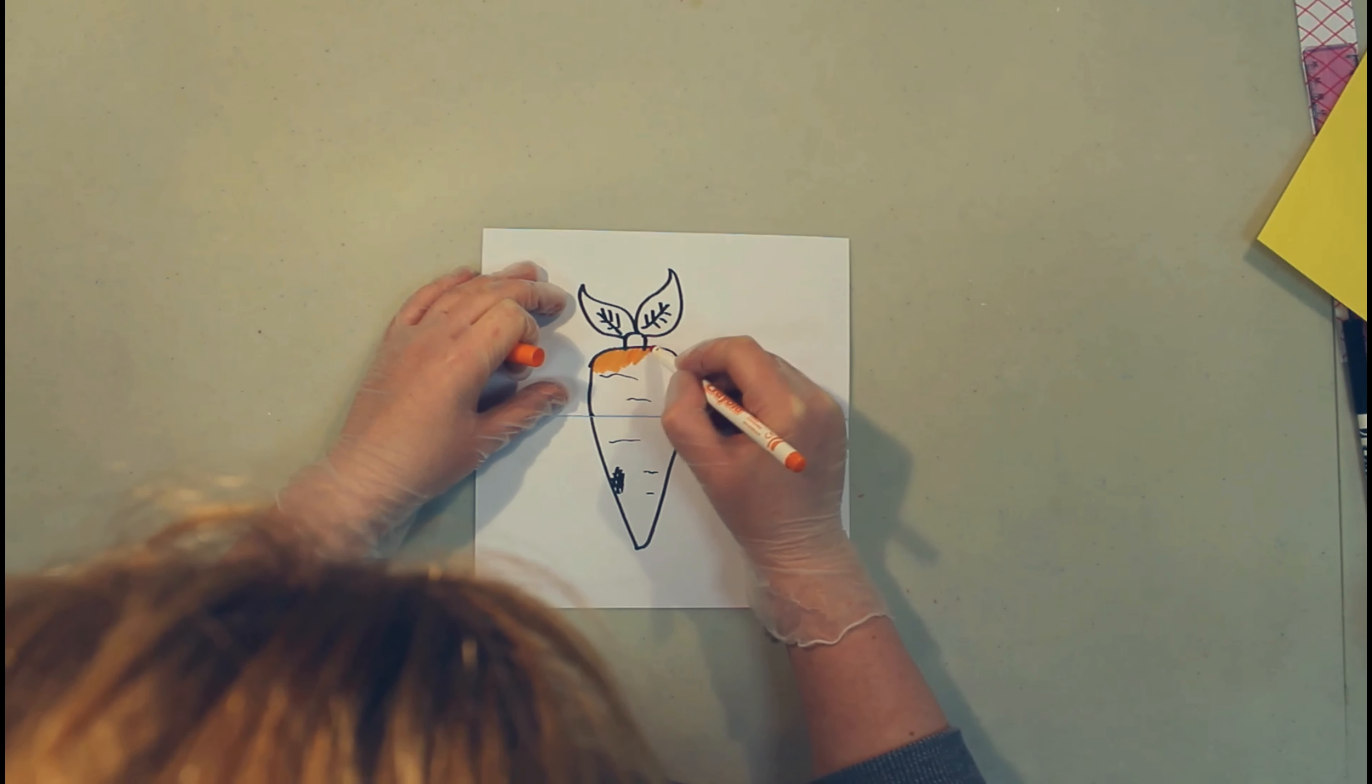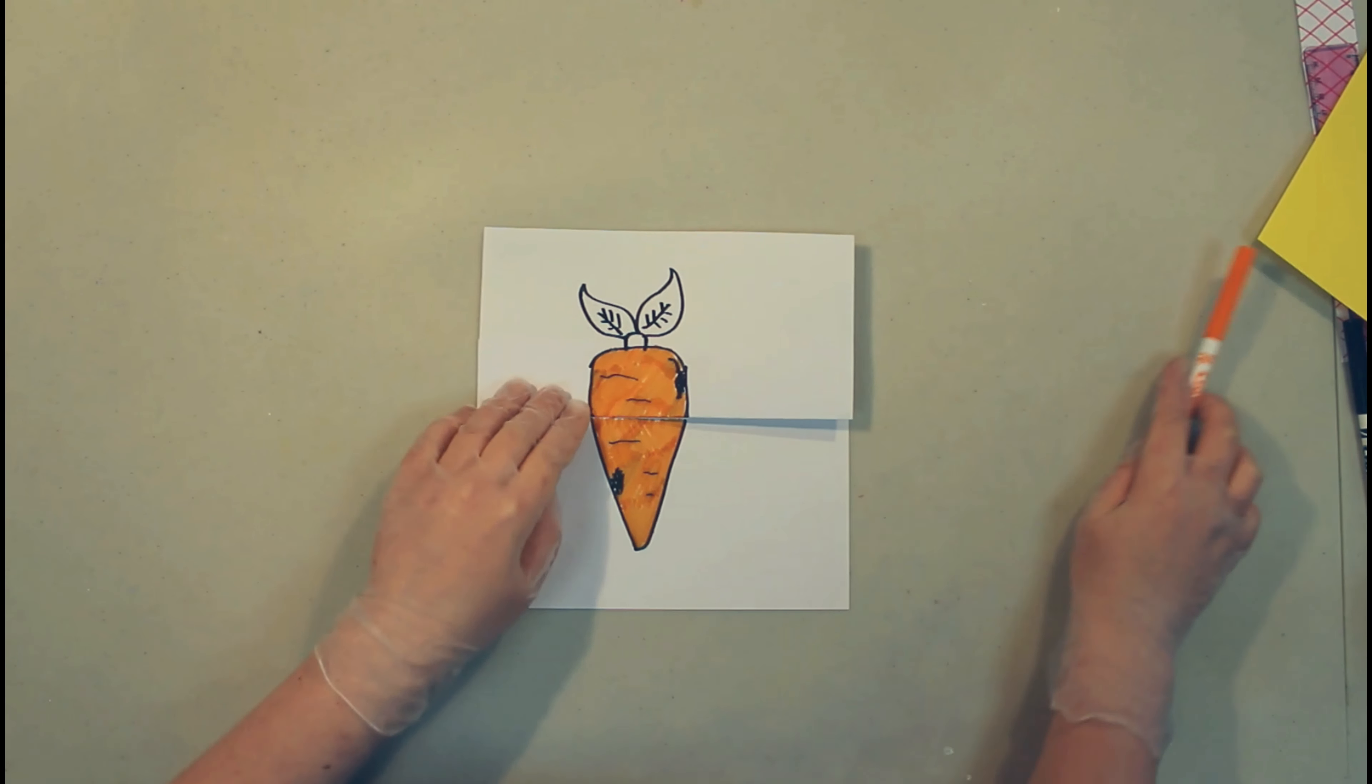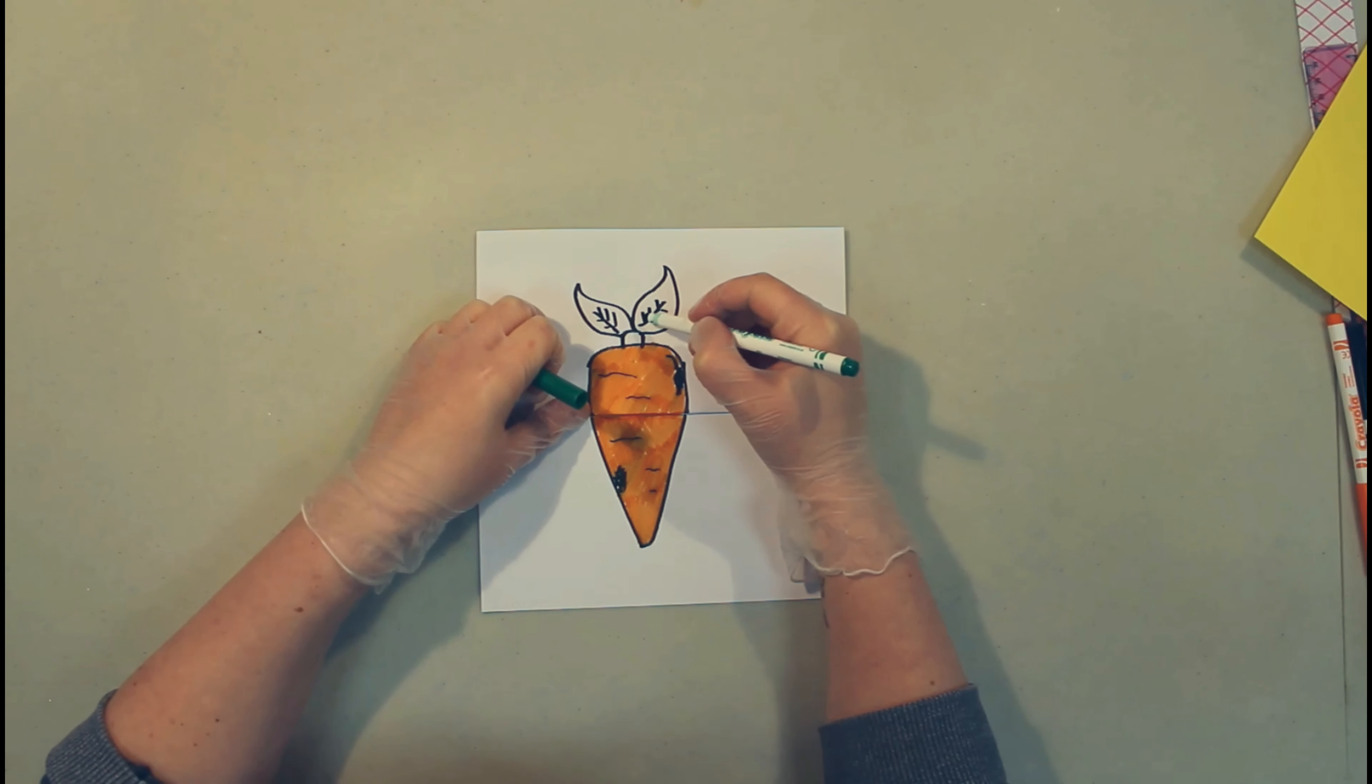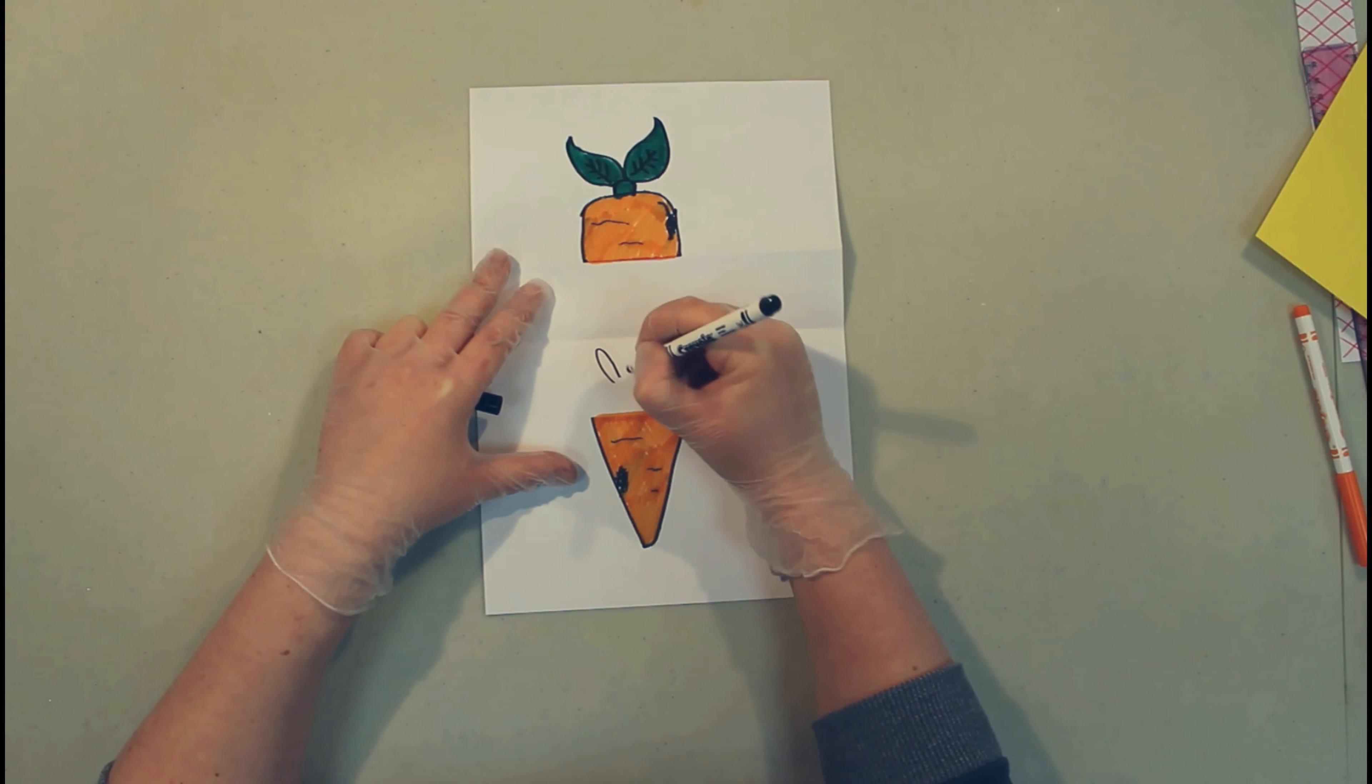Once you have drawn the carrot you can start coloring it in whichever color you like but preferably orange because that is our usual carrot color. Then you can color in the leaves and open it up and start to draw your rabbit.